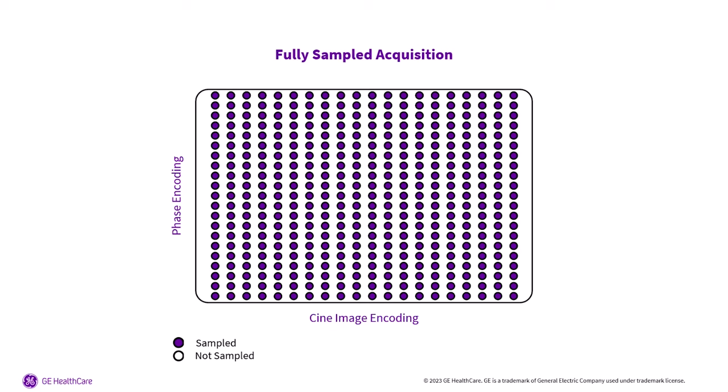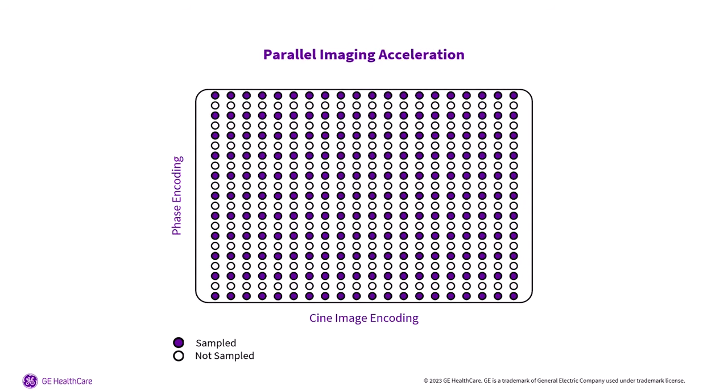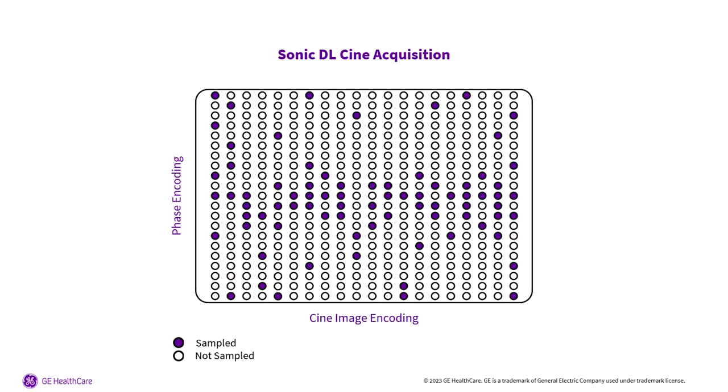Our approach involves two key strategies. The first step to accelerating our imaging is to employ parallel imaging. Historically, this provides a moderate level of acceleration, but is the foundation of our model-based reconstruction by relating the final image to the raw data acquired by the receiver coils. We employ a newly developed case-based sampling pattern that supports auto-calibrated parallel imaging while minimizing redundancies in space and time.